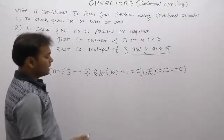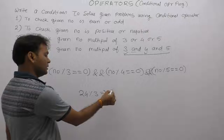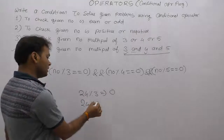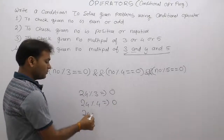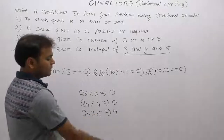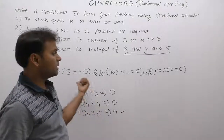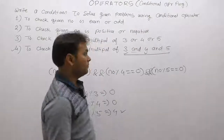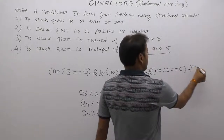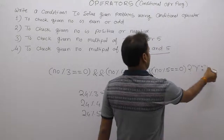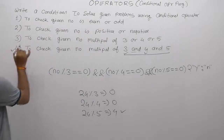We are testing some number, for example twenty-four. If this number is divided by five, the remainder is four, not zero. So the last condition is false. Using the question mark conditional operator: if condition is true then display yes, otherwise no. This is the solution of the fourth problem.